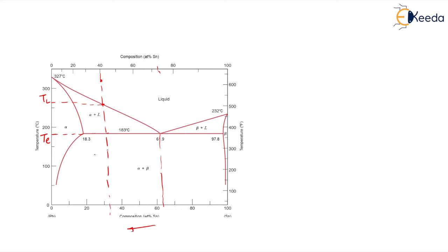So, this temperature on the liquidus line is Tl, and we know this is the eutectic line having the temperature T. In general, we are looking at this transformation in terms of elements A and B, not considering exact values — we are talking in general.